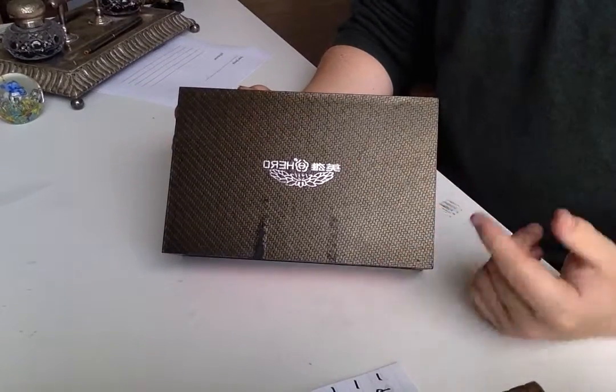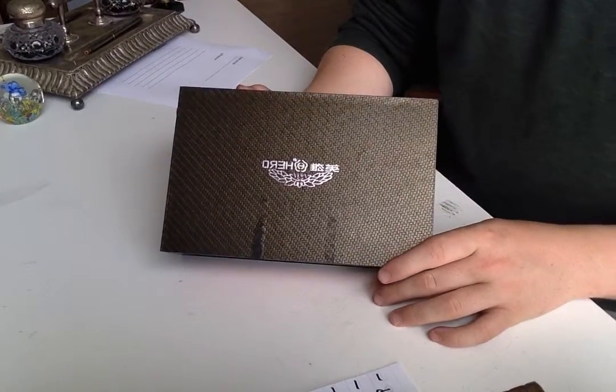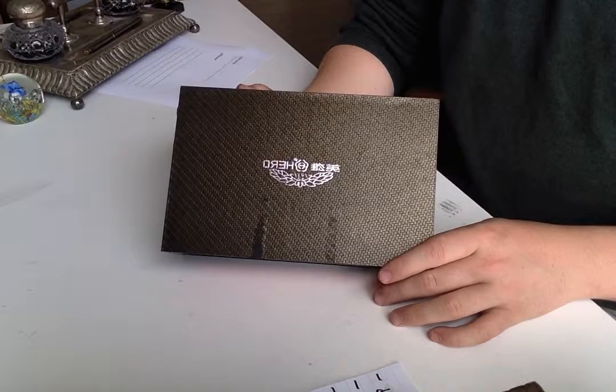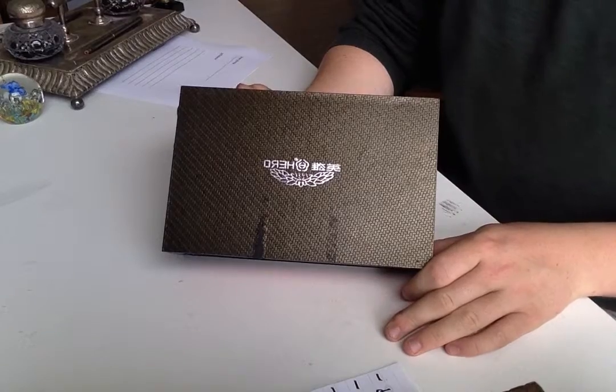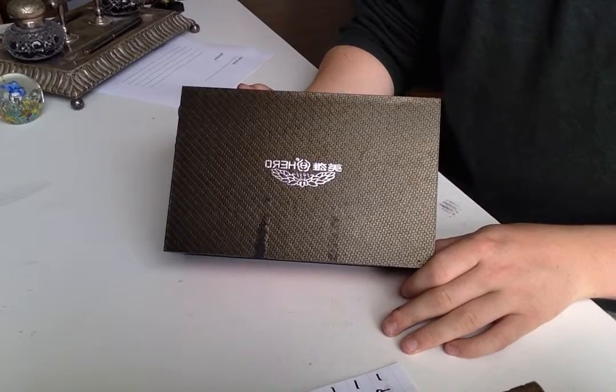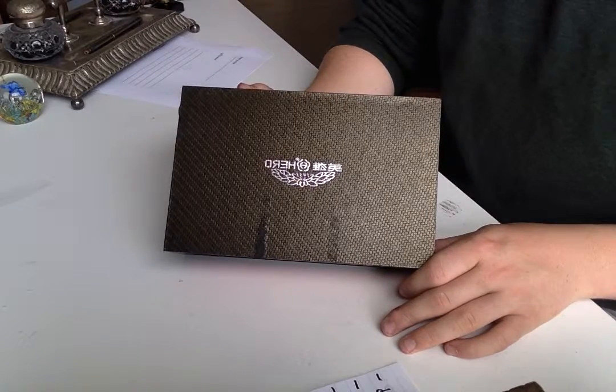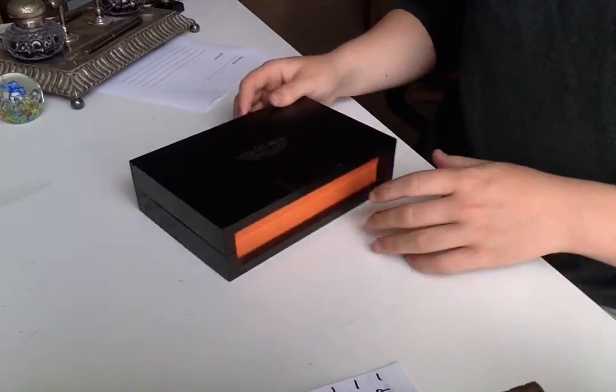Here on the box you can see—camera flips image, sorry again—you can see the word Hero, the Hero logo, and what I'm assuming is Hero translated into some other language. You can see a small crest beneath all of that, and above that crest below the Hero logo is the date 1931. I don't know what relevance that has.